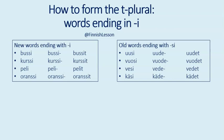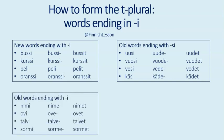Then we have two more groups of old words ending in the letter I. First: nimi — a name. The stem is nime, so the I is replaced with E, and the plural is nimet. More examples: ovi — a door — ovet; talvi — a winter — talvet; sormi — a finger — sormet.